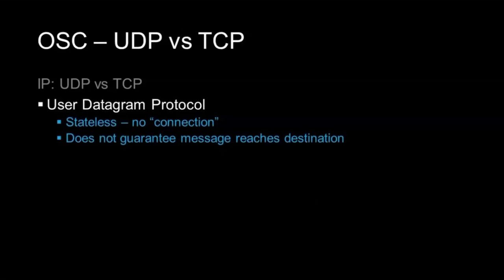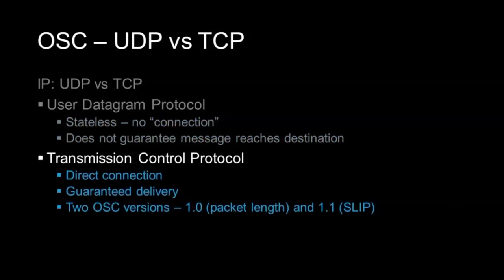In OSC, if you're moving a fader from zero to 100 and miss the packet at 50 percent, you probably don't want to retransmit that — you've already received updates for 60, 70, and 80 percent. TCP (Transmission Control Protocol) is a direct connection with guaranteed delivery — really great for show control applications where you know you're connected. If you're sending a cue GO, you don't want it to get lost over UDP. With TCP, it will try again and deliver it because there's no second cue GO coming.